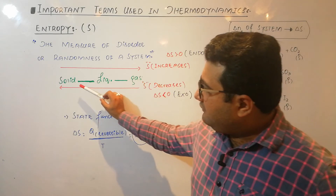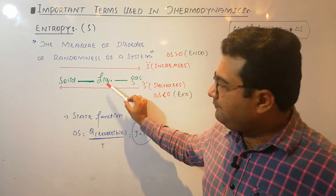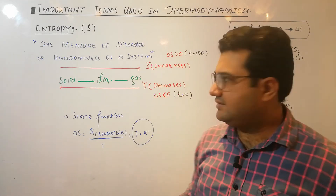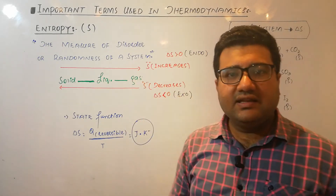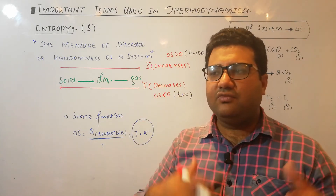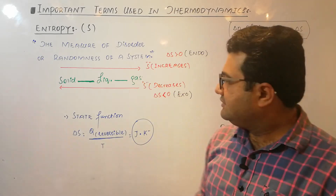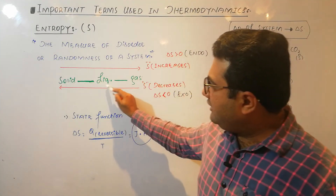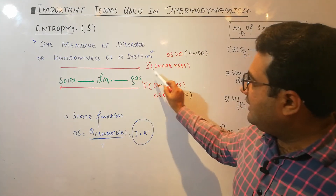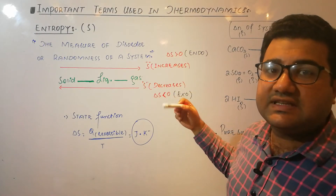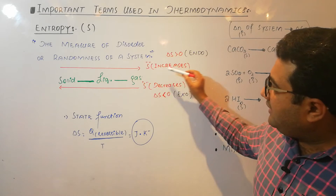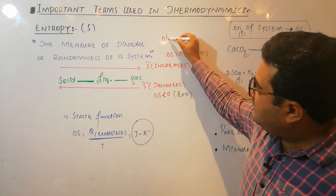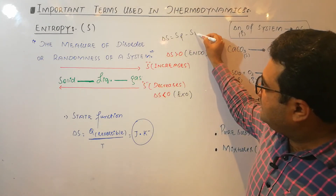When a solid is heated and converts to liquid, particles become somewhat free to move, so disorder and randomness increase. When liquid changes to gas, particles are totally free and move in a haphazard fashion — randomness is maximum. Moving from solid to liquid to gas, entropy always increases. Delta S equals final entropy minus initial entropy. When entropy increases, delta S is greater than zero.